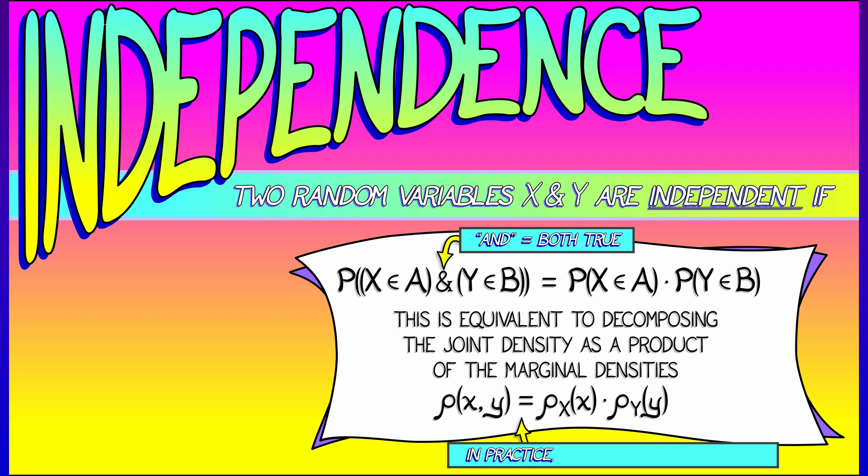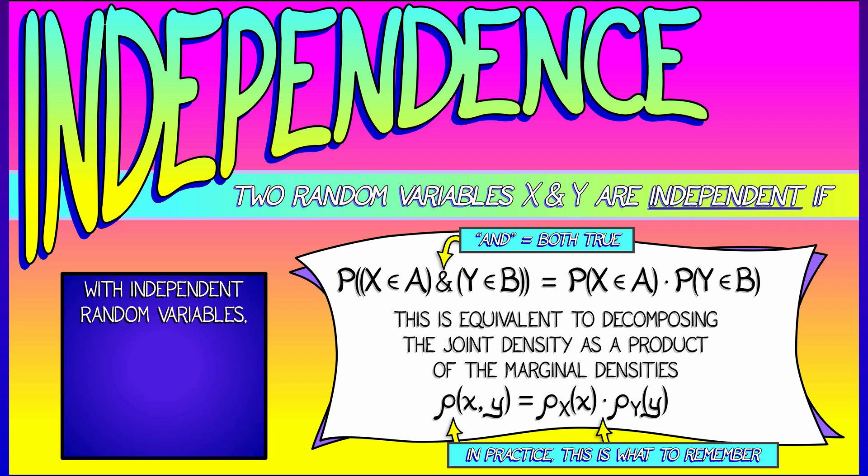Now, each of these is an equivalent definition of independence. I tend to remember the latter more than the former. Either way, that's fine. Whatever works for you. I tend to think that for independent random variables, knowing something about the probability of one doesn't tell you anything about the probability of the other.